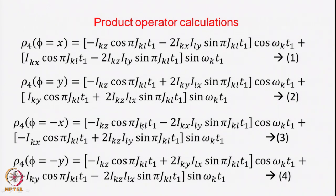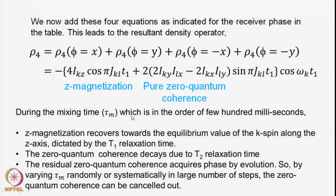Therefore, after adding all four phase cycle steps, only limited terms survive: −4IKz·cos(πJKL·t1) plus 2(2IKy·ILx − 2IKx·ILy), which is pure zero quantum coherence, multiplied by sin(πJKL·t1)·cos(ωK·t1). Clearly, the first term is Z-magnetization only, and the second term — 2IKy·ILx − 2IKx·ILy — is pure zero quantum coherence. By this phase cycling operation, we have retained Z-magnetization and zero quantum coherence.